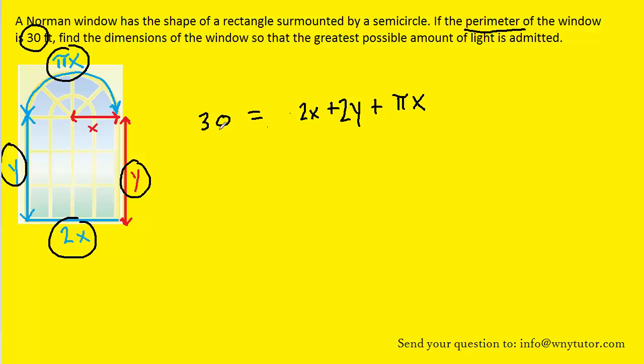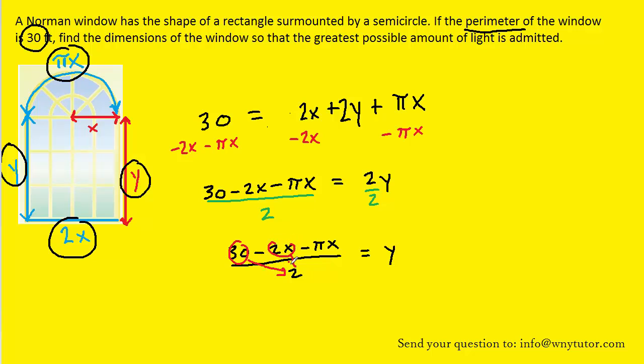Now this equation turns out to be what we call a constraint equation, because we are constrained by the fact that the perimeter must be fixed at 30. What we'll do next is solve this equation for y, and then we'll see why that's useful later. So we subtract 2x and πx from both sides, and then divide both sides by 2 to isolate y. We could leave this expression for y as is, but we could also simplify it by dividing the 30 by 2, the 2x by 2, and then the πx by 2 as well. It turns out this will be useful to us later, so let's hold on to it.